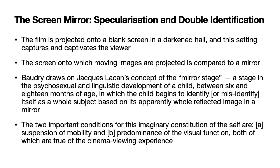The child looking at its own image in the mirror believes that I am that image. But the child is not as coordinated as the image in the mirror — the image is always superior to the child. By trying to imitate the image in the mirror, by believing that actually I am a unified subject, slowly the child develops into an actual more or less unified subject. This is how the development of the child happens. The child never gets completely unified because there is always a lack inside the subject. Just like the mirror gives the child an image of itself that is something more than what it is, and affects a certain misidentification which results in the child's growth — similarly, the screen is a kind of mirror onto which images are projected.